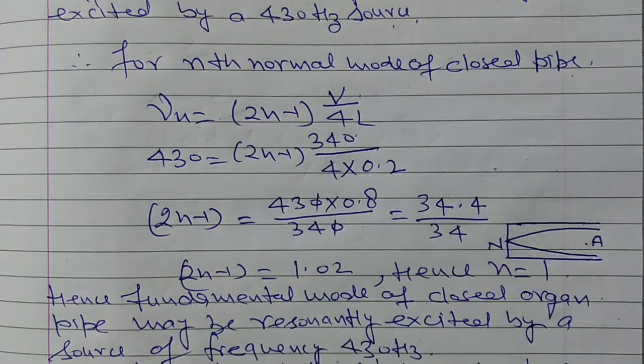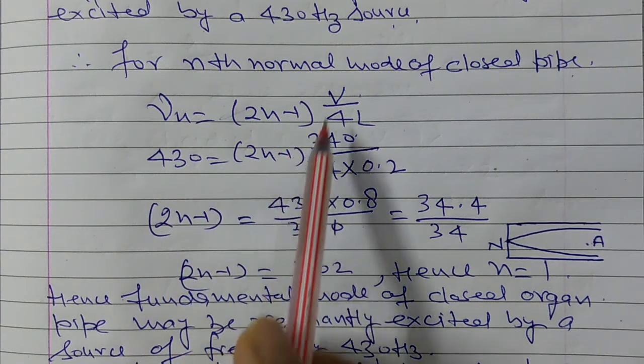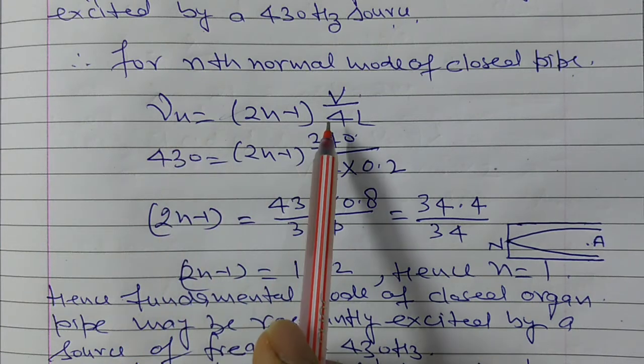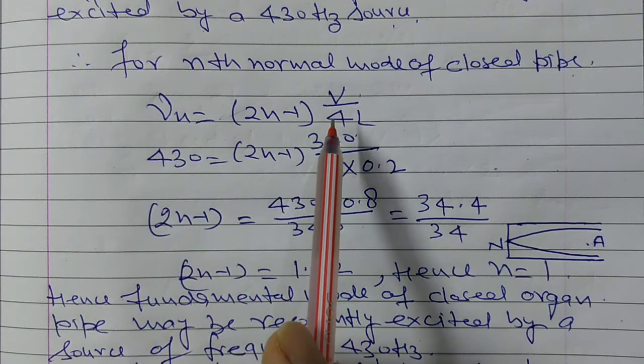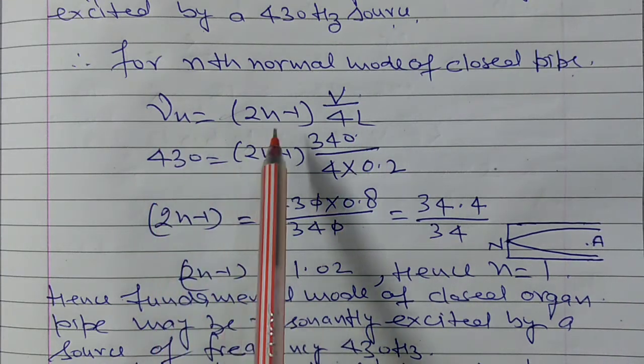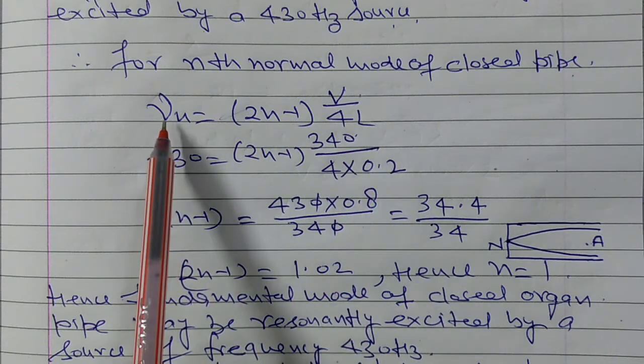for nth normal mode of vibration closed pipe, we know frequency νn is equal to (2n-1) into v upon 4L. We know this is our derivation, here we have direct use. Nth normal mode frequency νn is equal to (2n-1)v upon 4L, and this νn is given.